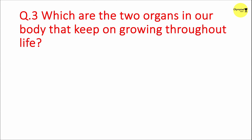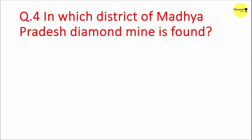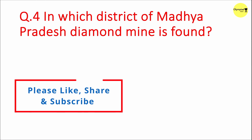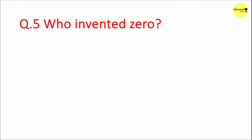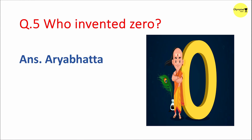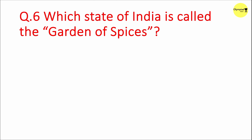Answer: Anemometer. Question 3: Which are the two organs in our body that keep on growing throughout life? Answer: Nose and ear. Question 4: In which district of Madhya Pradesh is a diamond mine found? Answer: Panna. Question 5: Who invented zero? Answer: Aryabhatt.